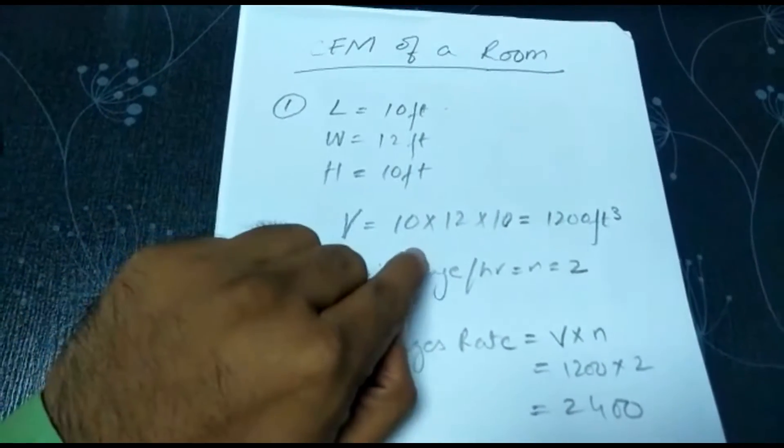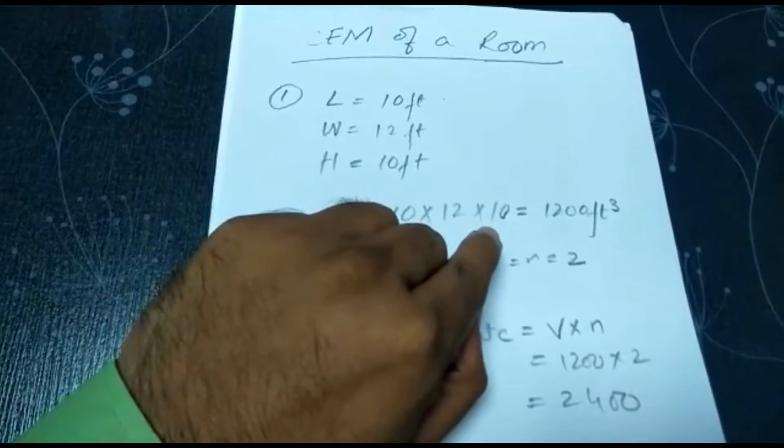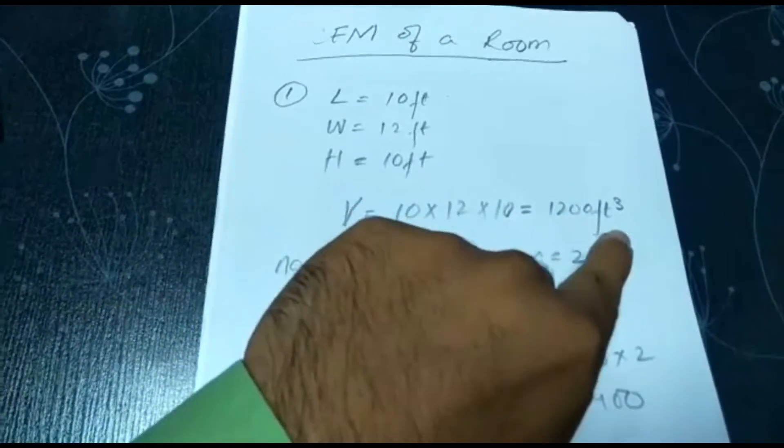Calculate the volume of the room by multiplying length, width, and height. For example, in my case I get 1200 cubic feet volume of the room.